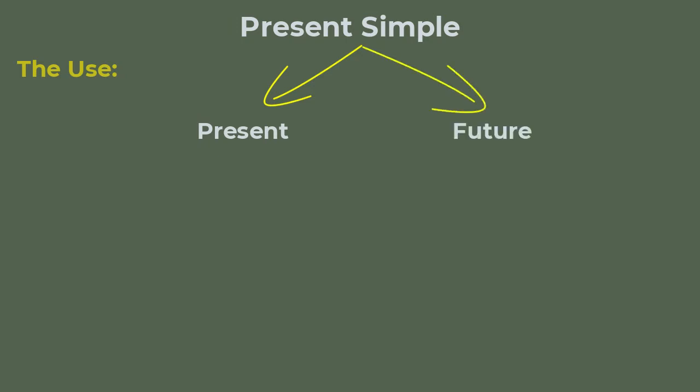Let's say the nearest future in this case. So now when it comes to the use in present we have different possibilities. For example, we can have habits, meaning things happening repetitively in time, repetitive actions. For example, she goes to work every day.